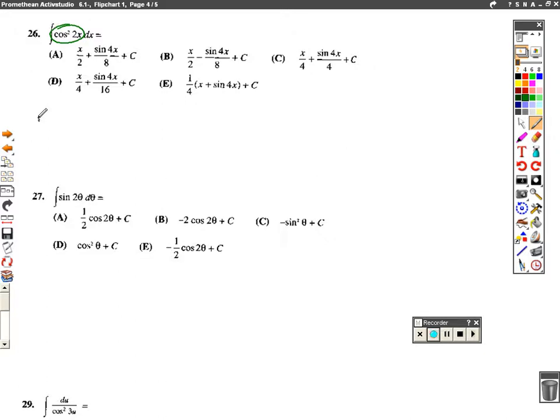We're using the fact that cosine squared of x is also 1 half 1 plus the cosine of 2x. Okay, so now we don't have cosine squared of x. We have cosine squared of 2x, right? So cosine squared of 2x, by this rule, would be 1 half 1 plus cosine of 4x, double what was inside of there.